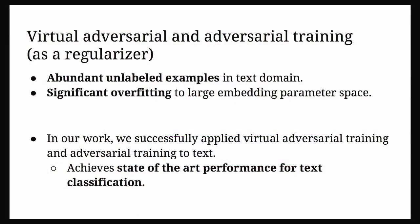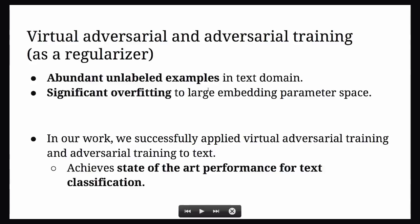The motivation for this is that in the text domain we have a lot of unlabeled examples — basically the entire web. Also, in the supervised case, overfitting happens extremely frequently with large datasets and large models. The problem with using larger models is that the embedding space gets bigger, becoming an order of magnitude greater than the number of parameters in your model. So we want to use this as a regularizer to improve text models in general.